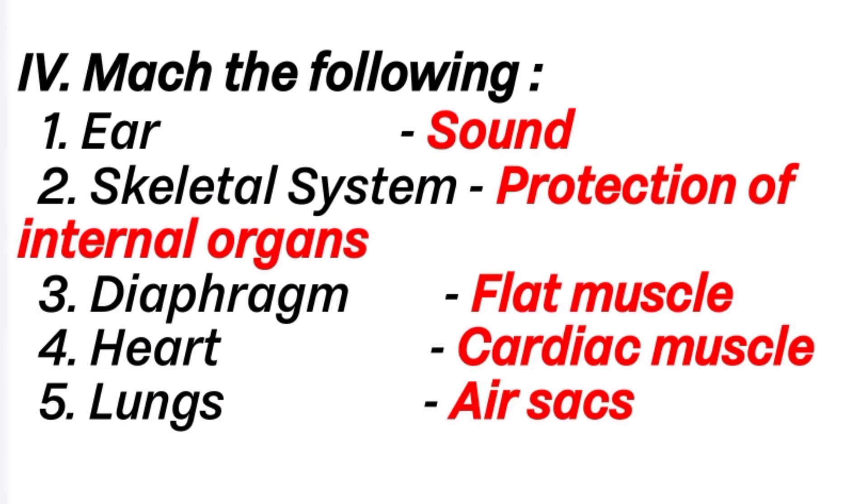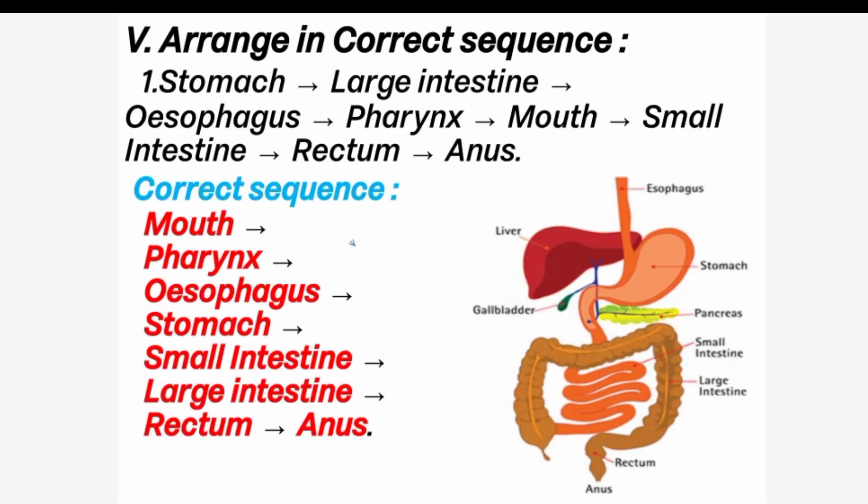Fourth: heart — the heart is made up of cardiac muscles. Fifth: lungs — the lungs contain millions of air sacs. Next, arrange the following in the correct sequence.